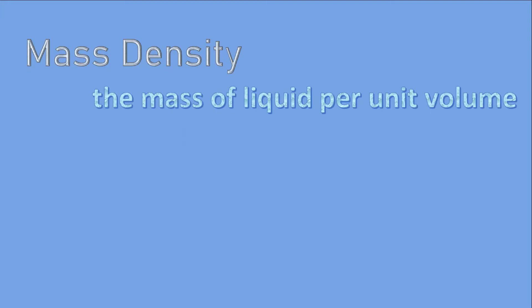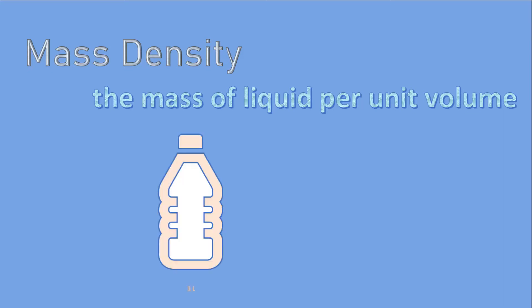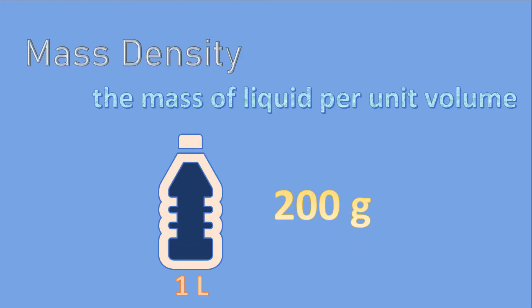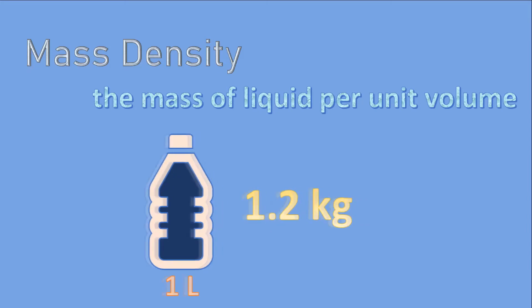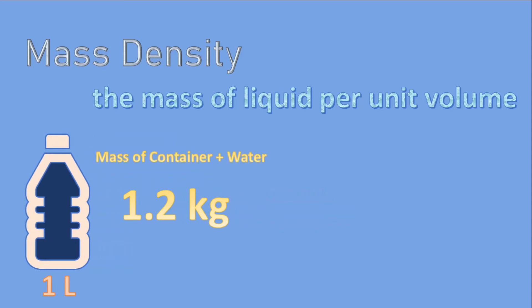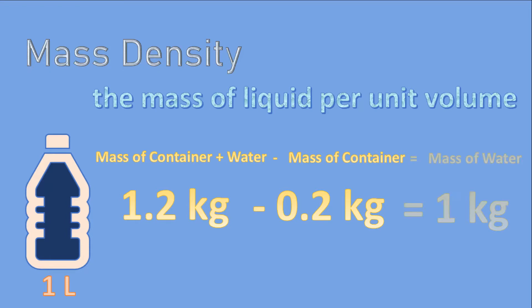Let's say you have an experiment and the goal is to determine the mass density of water. You use a 1-liter empty container that weighs 200 grams. Then you fill it with water and record its total mass — 1.2 kilograms. You get the mass of the water by subtracting the container mass of 0.2 kilograms, giving you a water mass of 1 kilogram.